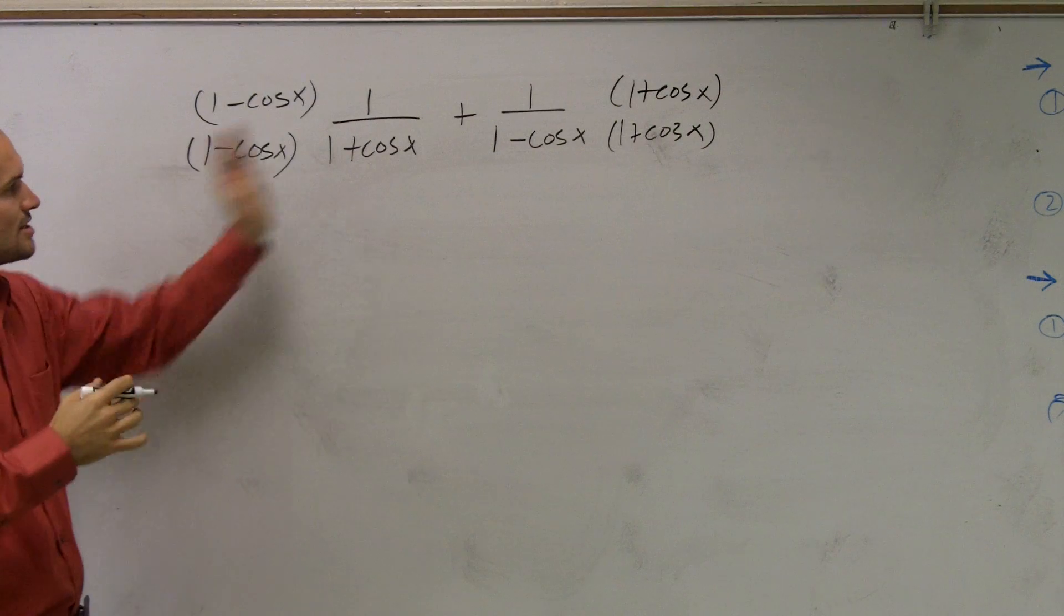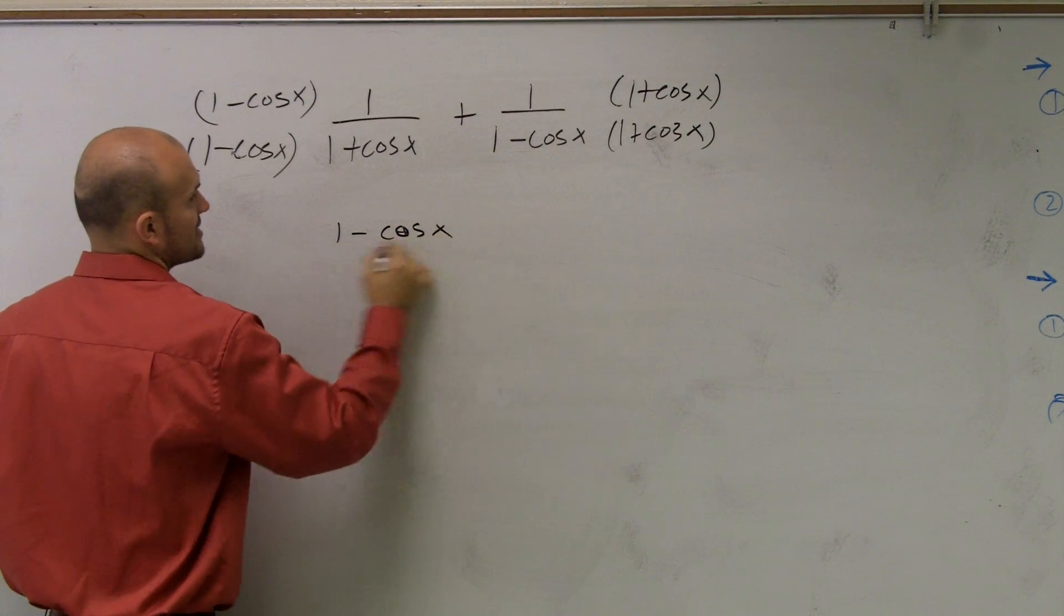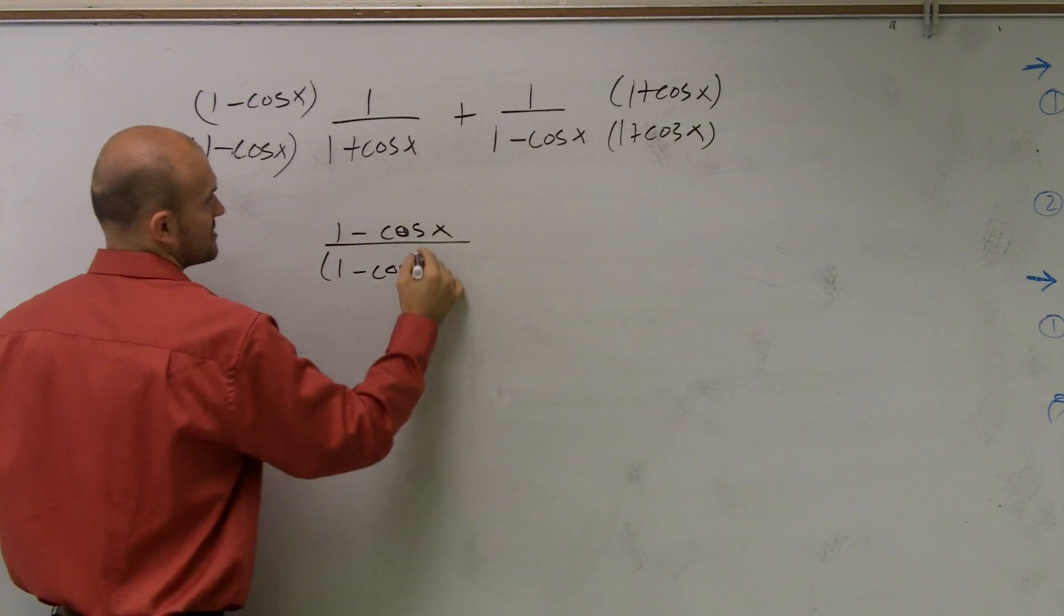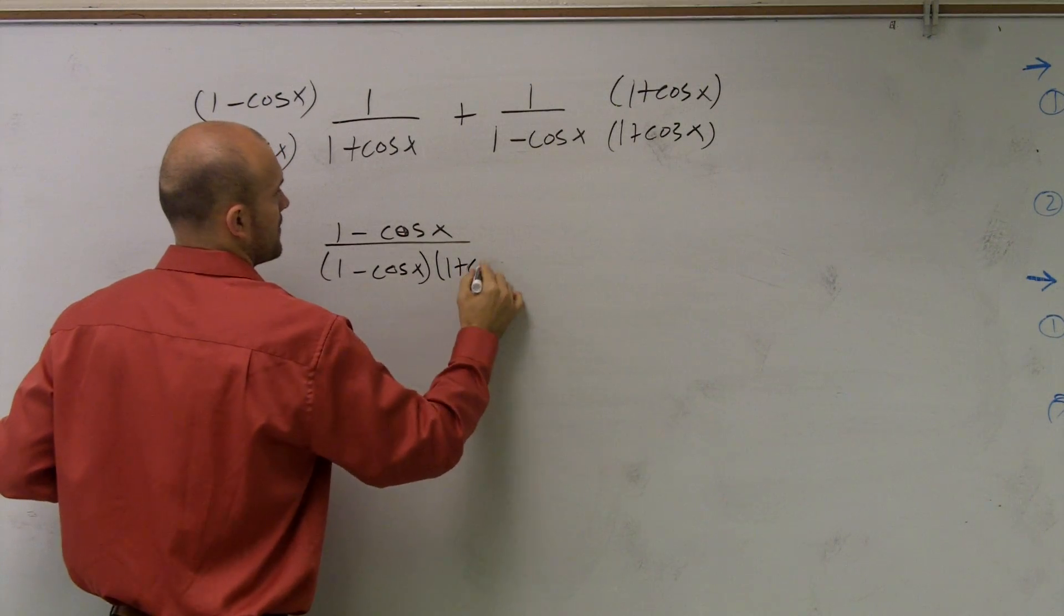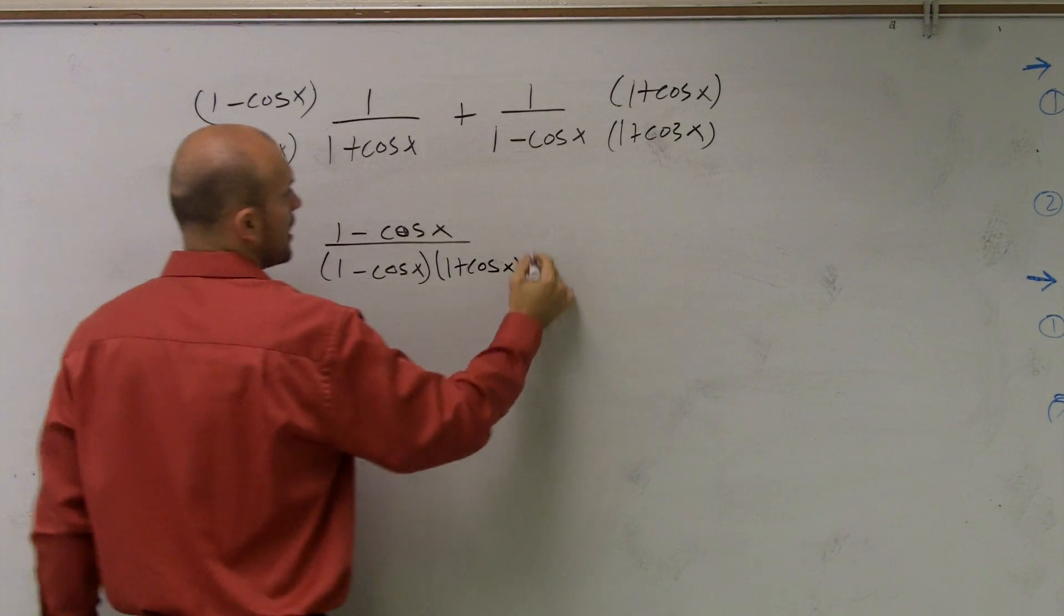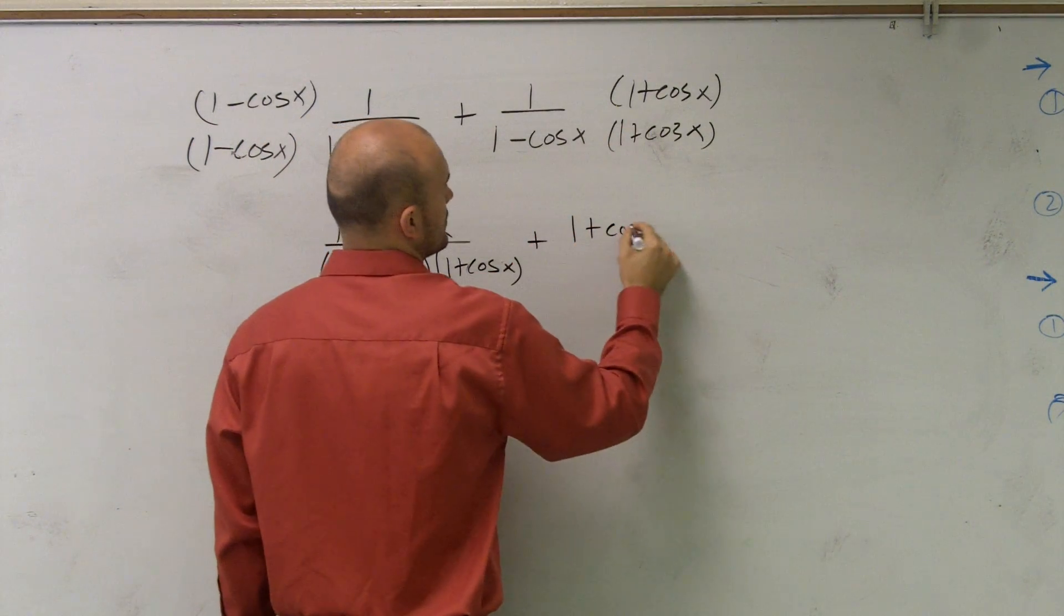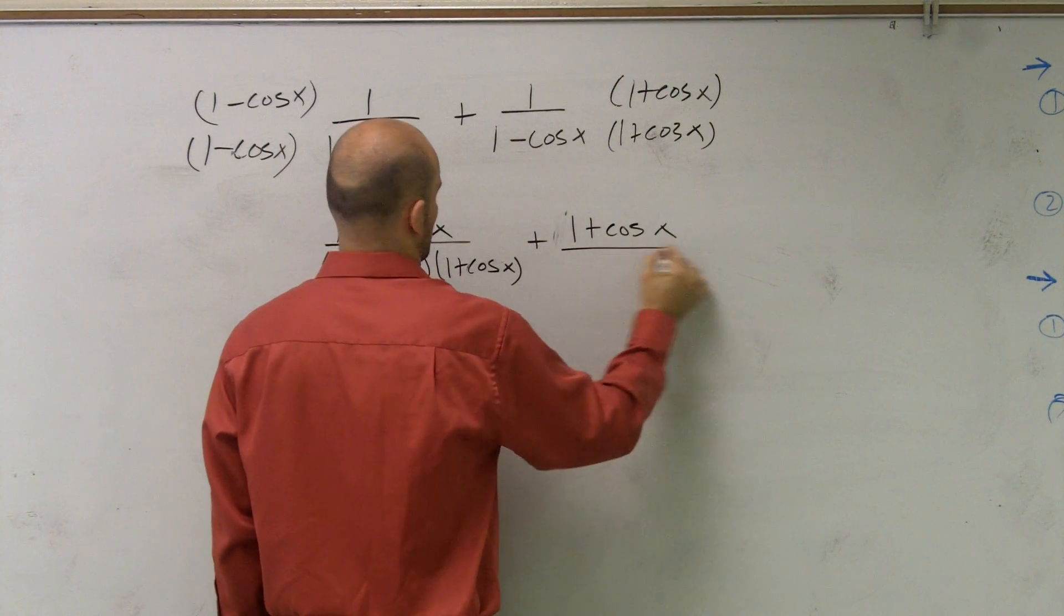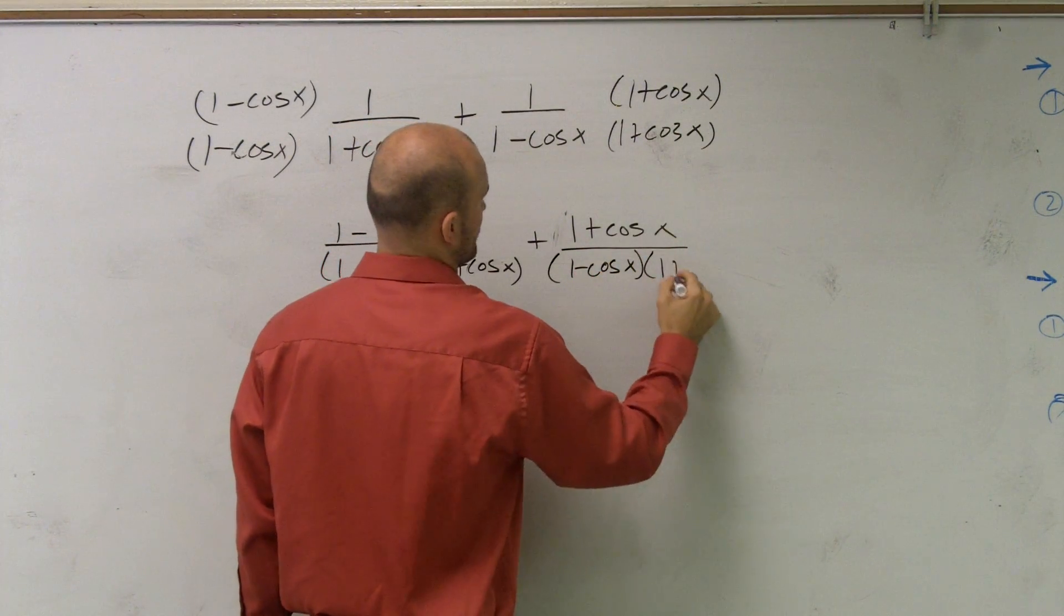Now what I'll do is I'll multiply across. So I'll have 1 minus cosine of x over 1 minus cosine of x times 1 plus cosine of x, plus 1 plus cosine of x over 1 minus cosine of x times 1 plus cosine of x.